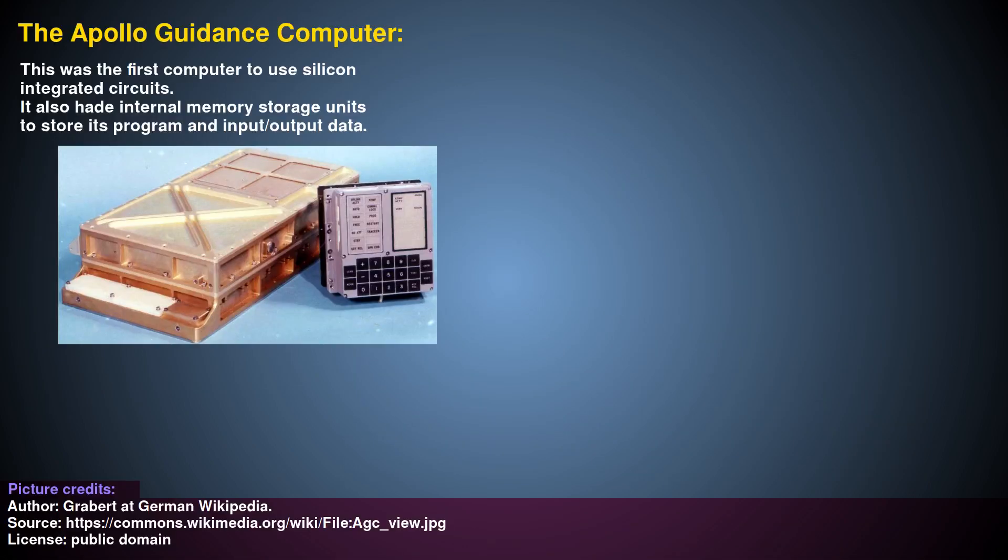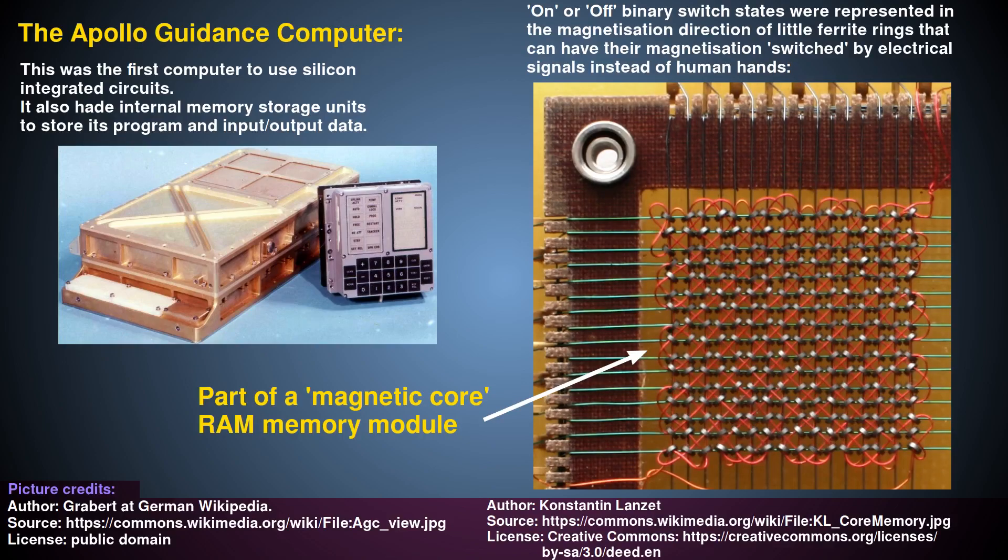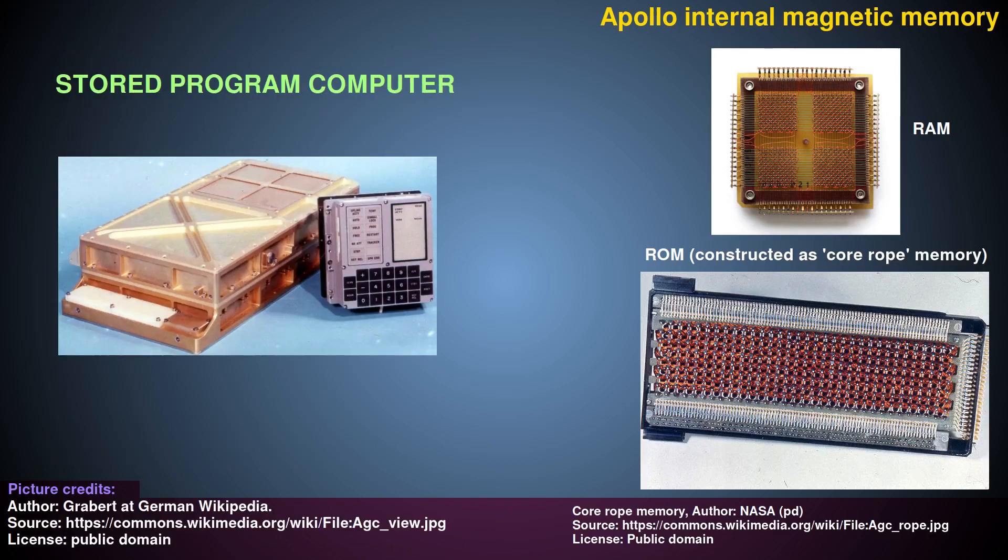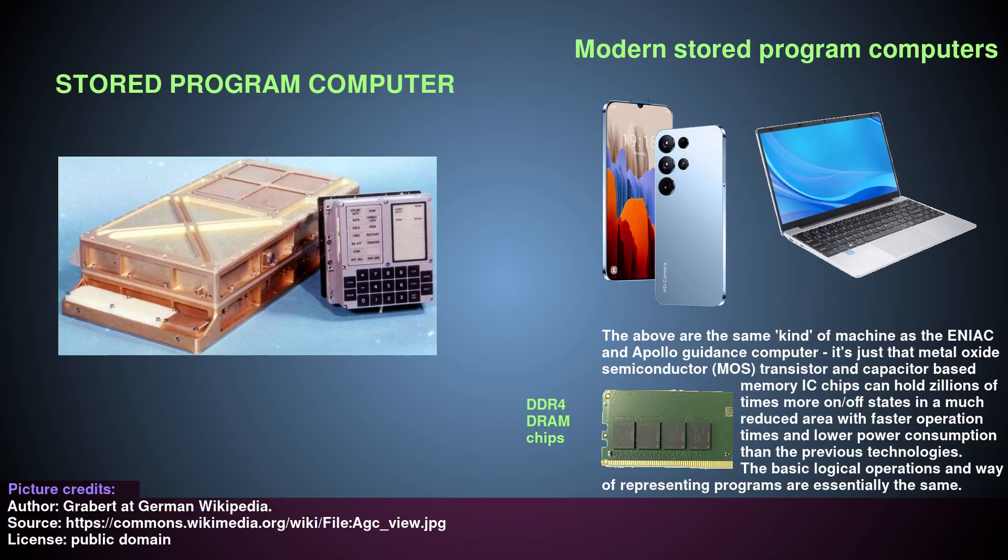As computers became more advanced, the program could be stored in internal electronic switching and charge storage circuits, called the memory of the computer. This did away with the need to manually position mechanical switches and cables. Also, these internal memory circuits could store many more arrangements of connections than the old switchboard type external memory system. These are the so-called stored program computers, modern versions of which we all use today.